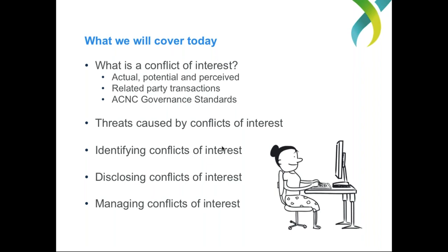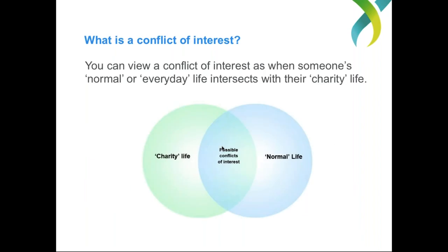OK, that's all the admin stuff out of the way — let's get into the presentation. First, we'll look at what we'll cover today, which is conflicts of interest. We'll first touch on the different types of conflicts of interest: actual, potential, and perceived. We'll look at the concept of related party transactions and see how all of this ties back into the ACNC governance standards. Then we'll look at the threats that conflicts of interest can cause to your organization, as well as ways to identify them, disclose them, and of course — maybe most importantly — to manage them.